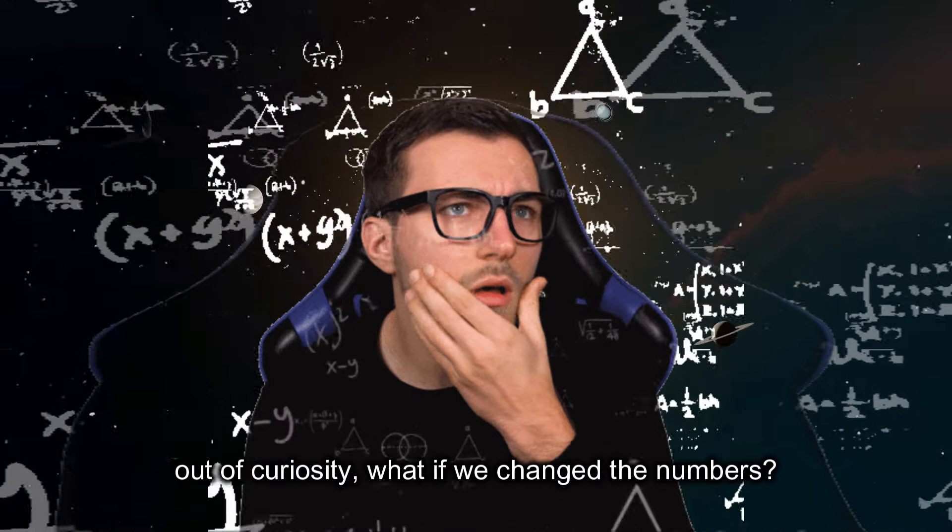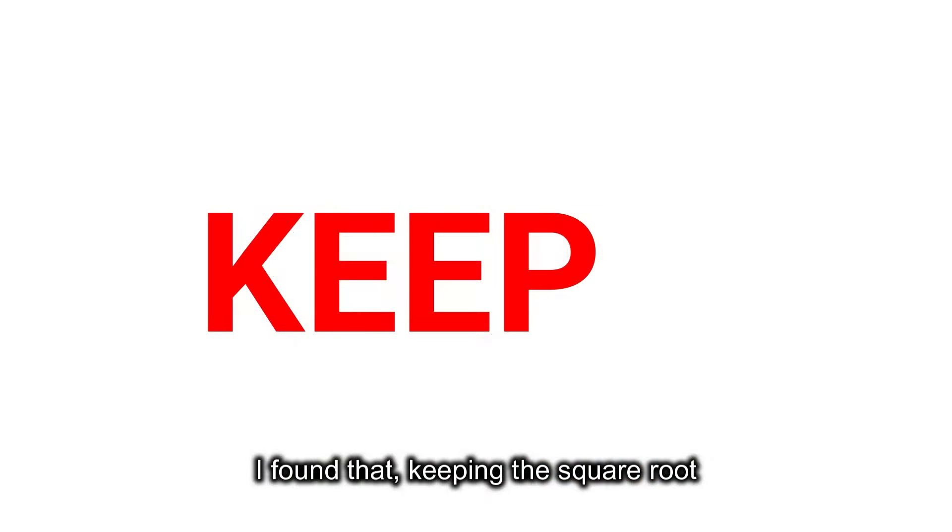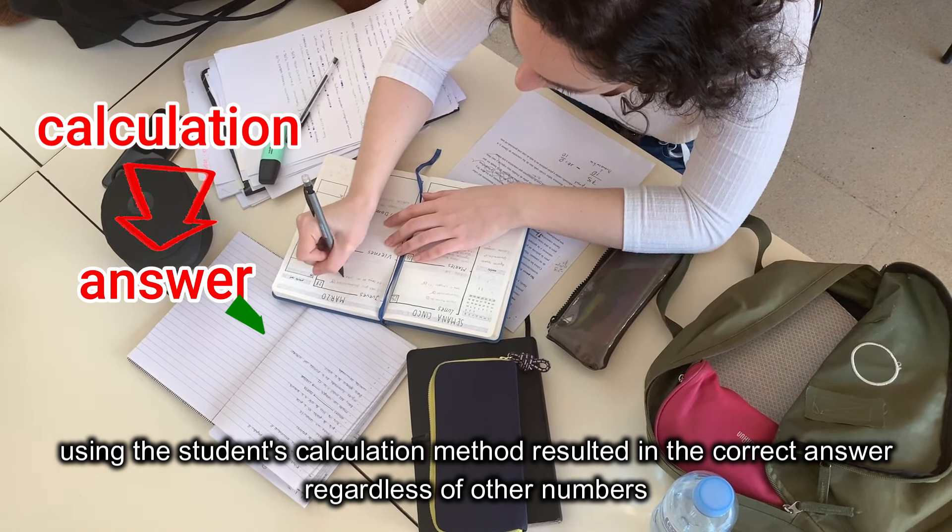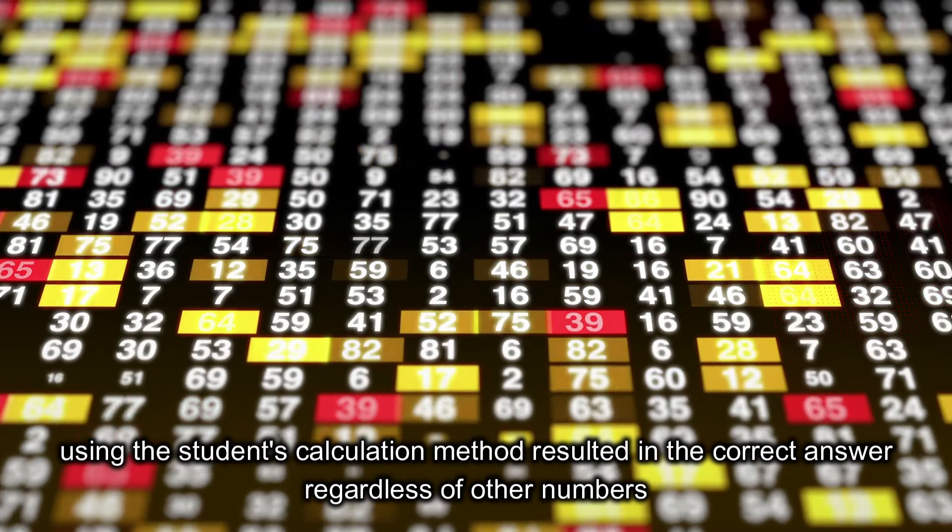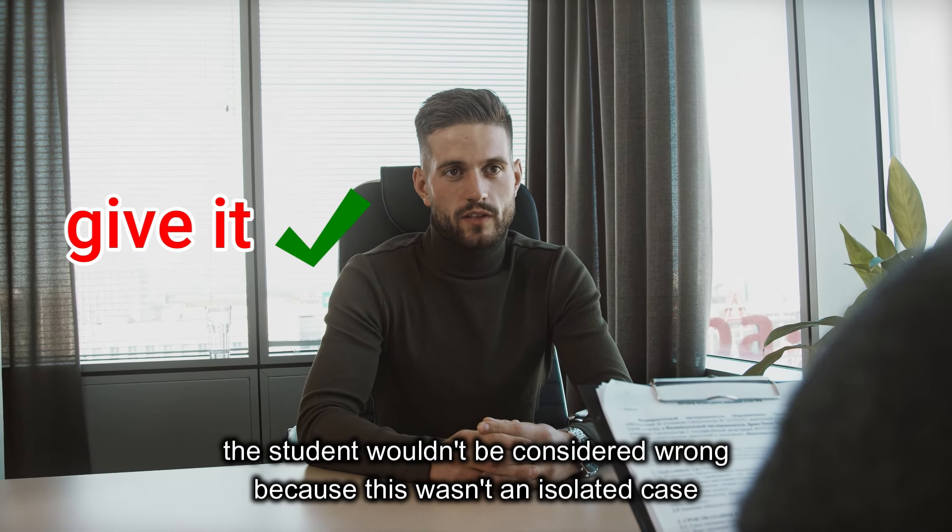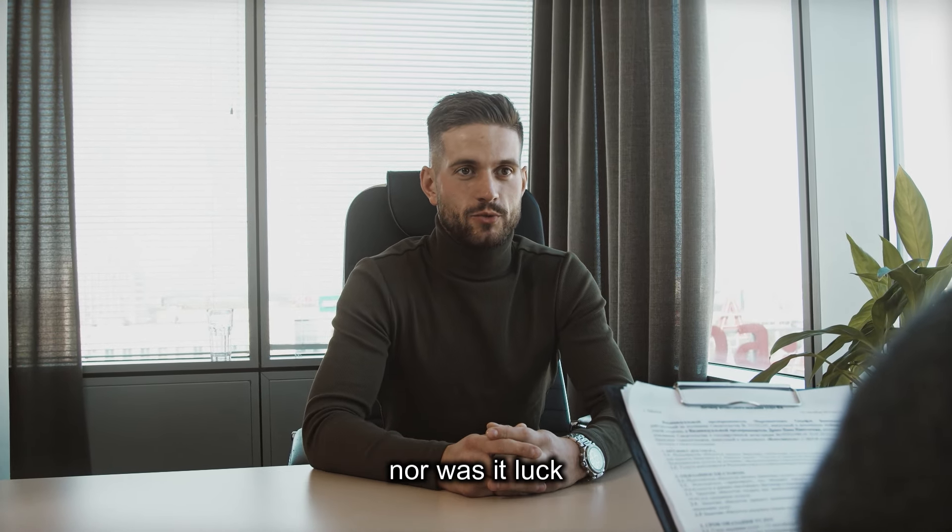Out of curiosity, what if we changed the numbers? I found that, keeping the square root, using the student's calculation method resulted in the correct answer regardless of other numbers. In other words, if I was the principal examiner, the student wouldn't be considered wrong because this wasn't an isolated case, nor was it luck.